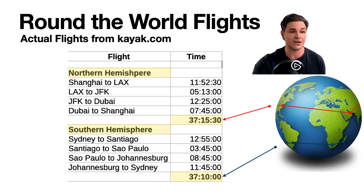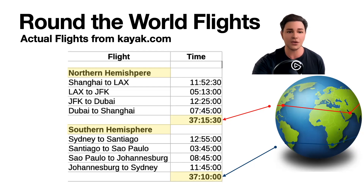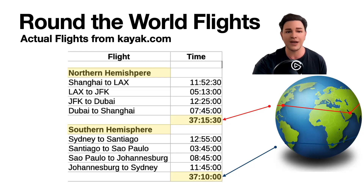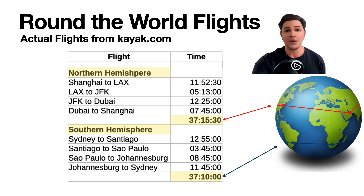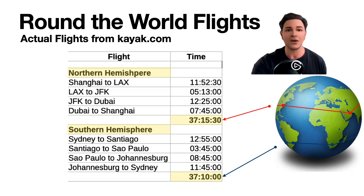On the lower half, the Southern Hemisphere, we go from Sydney, Australia to Santiago to Sao Paulo to Johannesburg and back to Sydney — a round trip around the world. Now look at the times these flights take. In the Northern Hemisphere, each leg is about 11 to 12 hours, then five hours, then 12 and a half hours — totaling about 37 hours to go around the world. The Southern Hemisphere is almost 13 hours, three and a half hours, and almost nine hours — also totaling 37 hours.